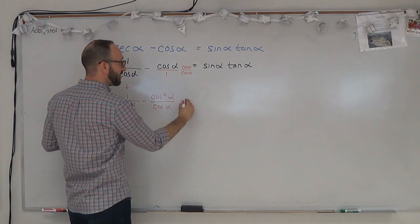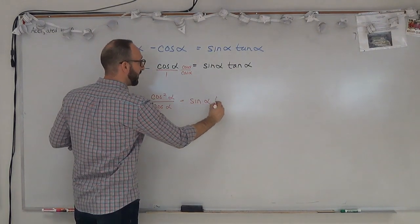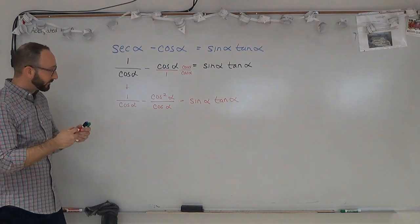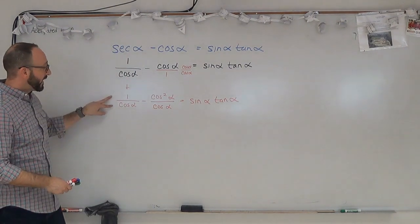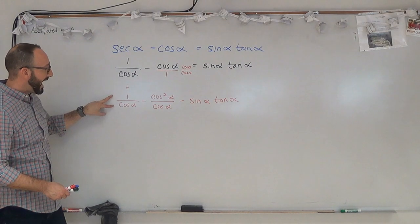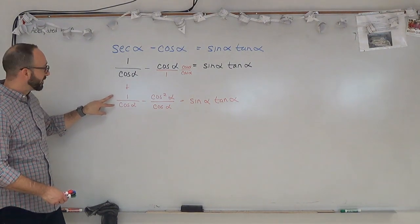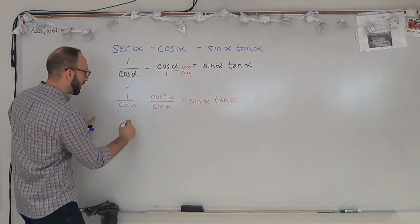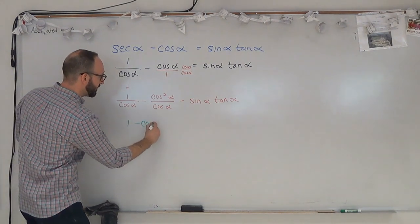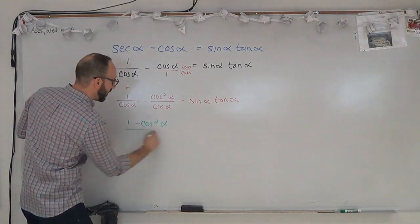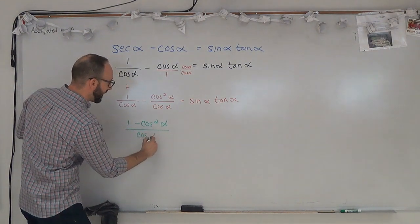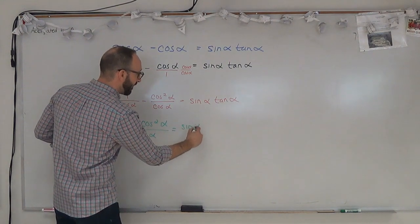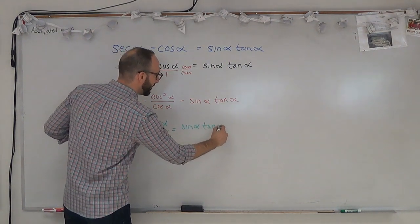And that should equal sin alpha tan alpha. So now that we have a common denominator, we can actually subtract one fraction from the other. When we do that, we're going to get 1 minus cosine squared alpha all over cosine alpha, and that's going to equal, hopefully, sin alpha tan alpha, if this is an identity.